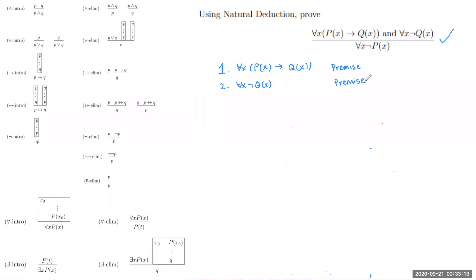From here we have our two premises, and we can also write out our conclusion. At the very bottom, our conclusion is: for all x, not P(x). This is what we're trying to conclude — this is the setup where we're working our way inwards.